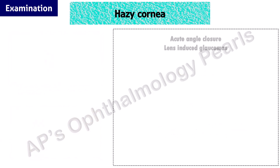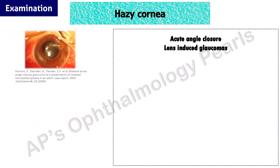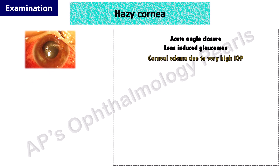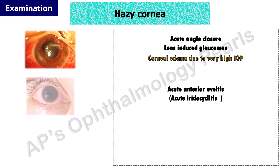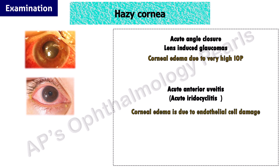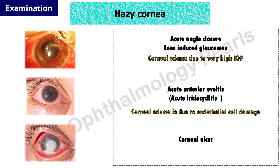Corneal haze can occur in acute angle closure or lens-induced glaucomas, where the corneal edema is due to very high intraocular pressure — a normal IOP being one of the factors that helps in maintenance of corneal transparency. In acute iridocyclitis, corneal edema is due to endothelial cell damage. In corneal ulceration, the corneal haze is due to leukocyte infiltration.